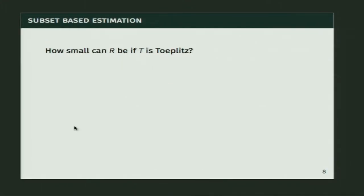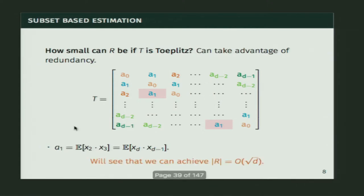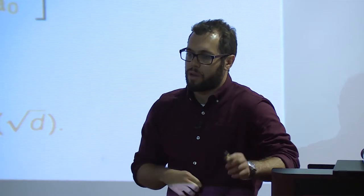How are we going to get around this lower bound in the Toeplitz case? We're going to take advantage of redundancy. If you have a Toeplitz matrix, the correlation a_1 — the correlation of things that are distance 1 apart — appears a whole bunch of times. If I want an estimate of a_1, I could estimate the correlation between x_2 and x_3, or between x_d and x_{d-1}. Because of this redundancy, we can achieve entry sample complexity equal to square root of d instead of d.